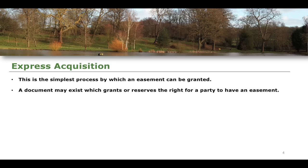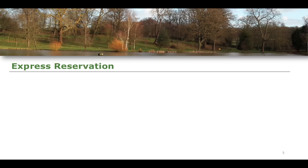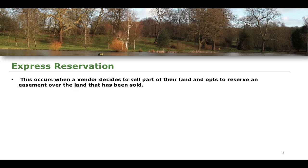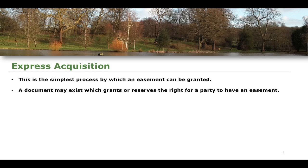A document may exist which grants or reserves the right for a party to have an easement. So it's not just talking about the granting of an easement, but also the idea of a reservation of an easement. Granting refers to the straightforward conferral of the right. But express reservation occurs when the vendor of a property decides to sell part of their land but wants to reserve an easement over that land that has been sold — rather than having that right granted to them through a document conferring property rights.